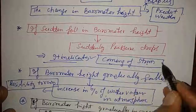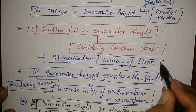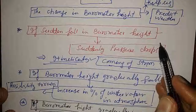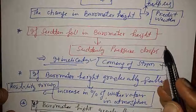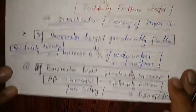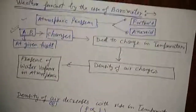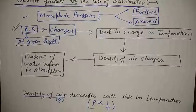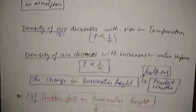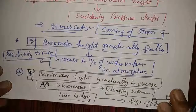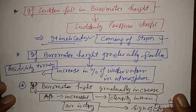The velocity of a storm can also be calculated based on how much pressure suddenly drops — the amount of pressure drop. So this is all about weather forecasting by the use of a barometer. Thank you and have a nice day.